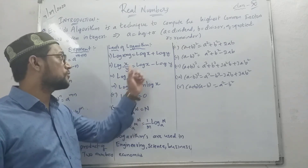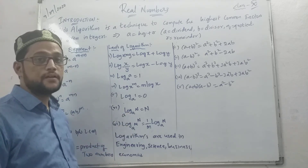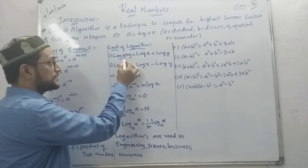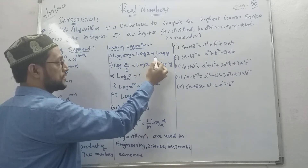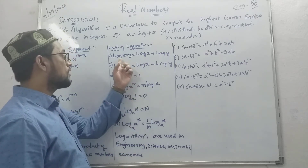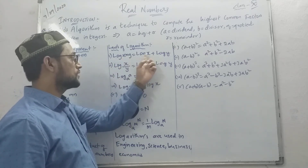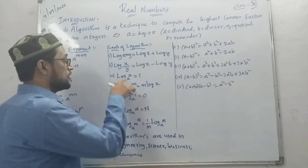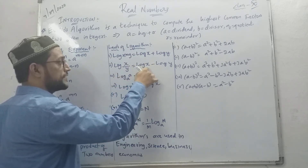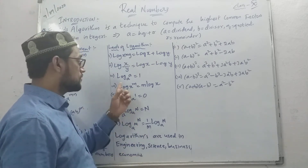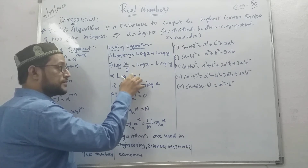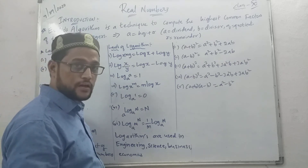Next important topic is Laws of Logarithm. For log formulas, see here carefully. Log is the short form. First formula: log of X into Y — multiplication becomes addition: log X plus log Y. Second formula: log of X divided by Y — division becomes subtraction: log X minus log Y. Third formula: log base A of A — both alphabets are the same, so the answer is 1.